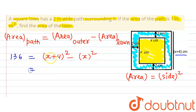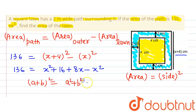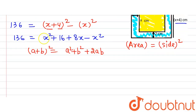Now let's simplify. So we will have (x+4)² which gives us x² + 16 + 8x, minus x² equals 136. Here we have used the formula for (a+b)², which says a² + b² + 2ab, where a is x and b is 4.